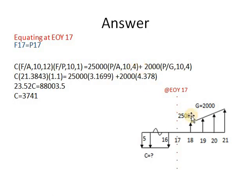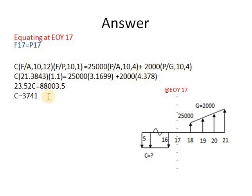Plus the present of the gradient: P equals G into P/G at i, N=4. The plus sign is used because the gradient is increasing; if it were decreasing, you would change it to negative. By equating both sides, you get the unknown value of C, which is $3,741.